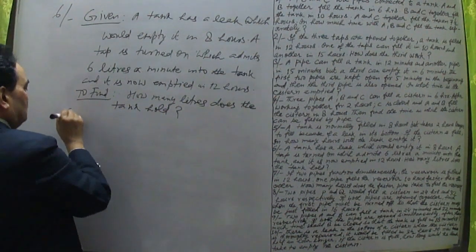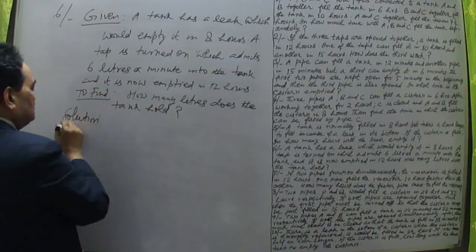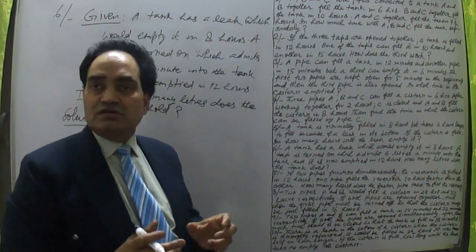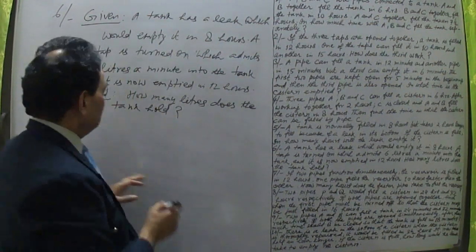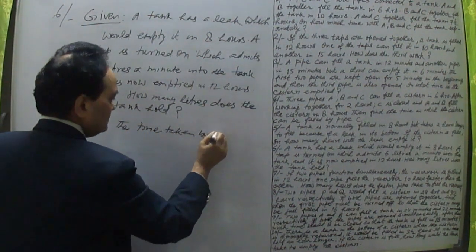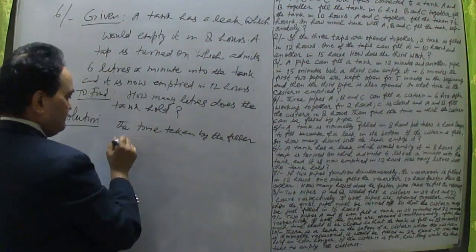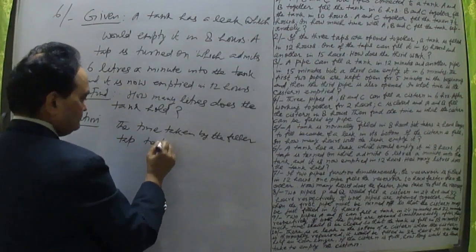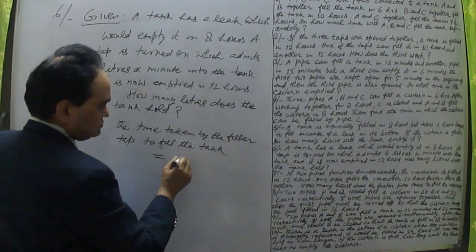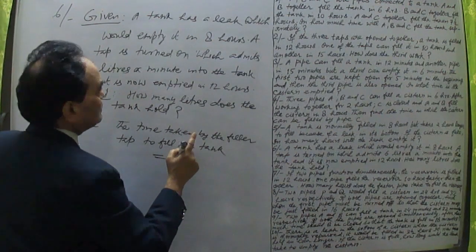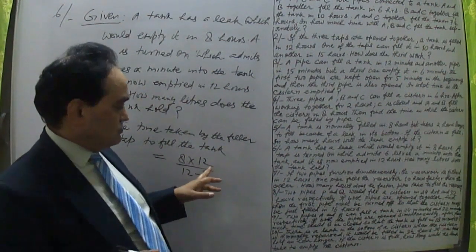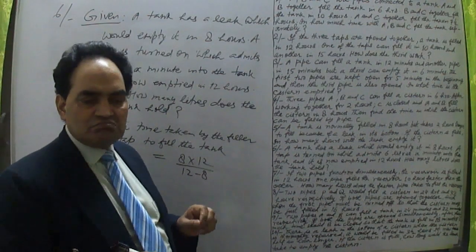Similarly, when two taps work — one filling, one emptying — we find the filler tap's time using the formula: time taken by filler tap equals 8 into 12 divided by 12 minus 8, which gives 96 divided by 4.